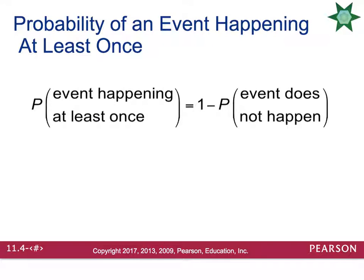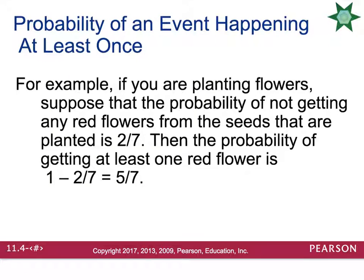That formula is: the probability that an event happens at least once equals 1 minus the probability that the event does not happen at all. For example, if the probability of not getting any red flowers is 2/7, then the probability of getting at least one red flower is 1 minus 2/7, which equals 5/7.